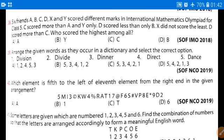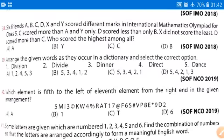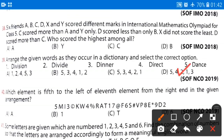First of all, if we will arrange these words in a dictionary, first letter, what letter will come? First of this dance will come. D-A-N-C-E dance will come. After that, this dinner will come. Then, this direct will come. After that, this divide will come. And then, division will come. Correct arrangement will be 5, 3, 4, 2, 1. This will be the correct answer. Option C is the correct answer.